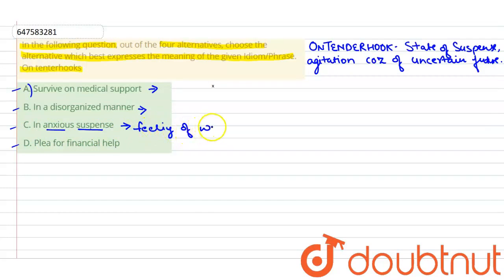feeling of worry or nervousness. So, it is similar to the meaning of the word on tender hooks because it is a state of suspense agitation. Anxious suspense.